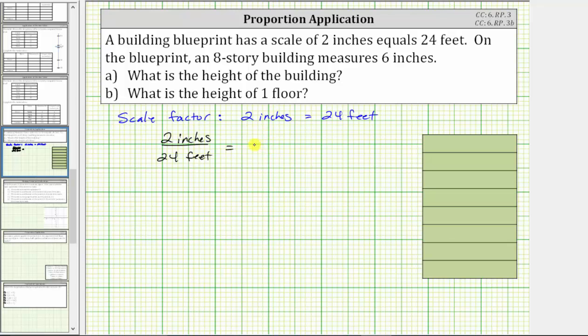...must equal the second ratio, which will come from the fact that on the blueprint the measurement is six inches. Which means the second ratio is going to be six inches to an unknown number of feet, where the unknown number of feet is going to give us the height of the building.